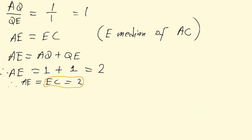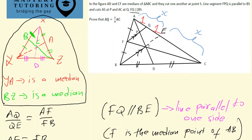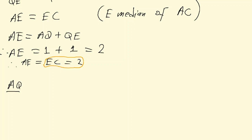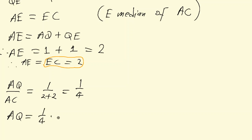Since AE equals EC and AE equals two, we know EC also equals two. So putting this on the diagram: AE is two and EC is two, meaning the whole length AC equals four. Therefore AQ over AC equals one over two plus two, which is one over four. So AQ equals one quarter of AC — that is our answer to this question.